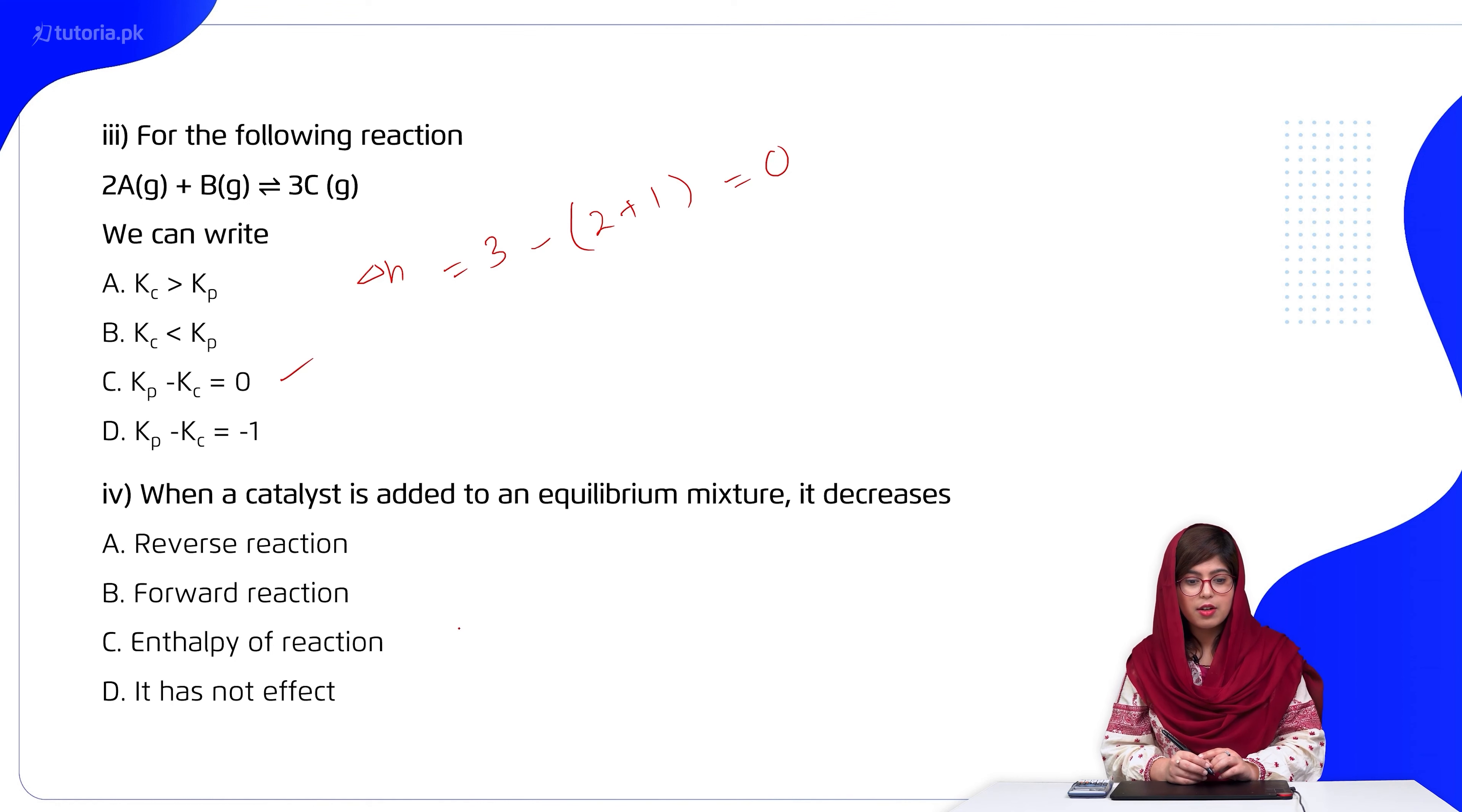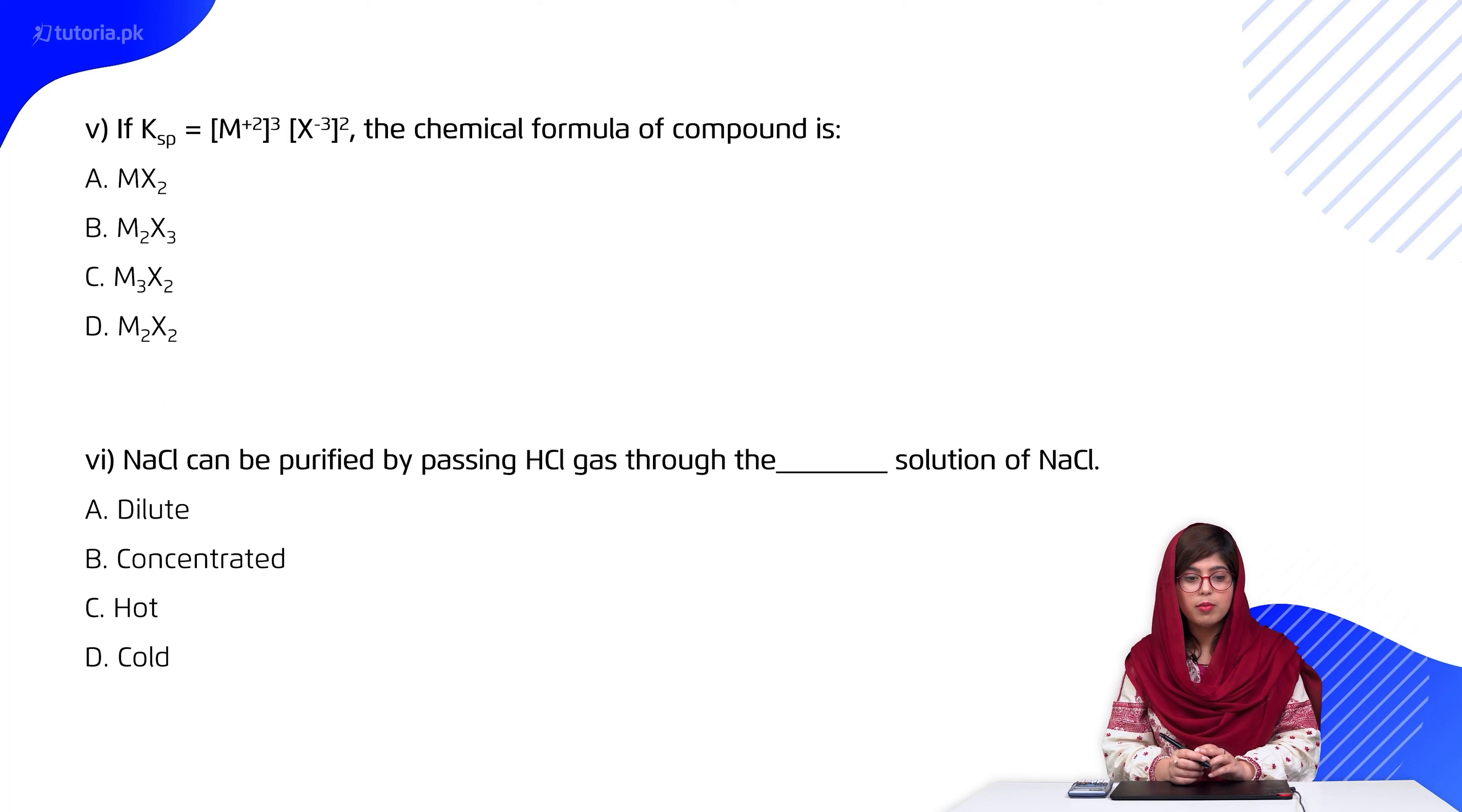When a catalyst is added to an equilibrium mixture, it decreases: A. reverse reaction, B. forward reaction, C. enthalpy of reaction, D. it has no effect. Answer is D. Then students, if solubility product equals (M+2) raised to power 3 times (MX-3) raised to power 2, the chemical formula of the compound will be C.